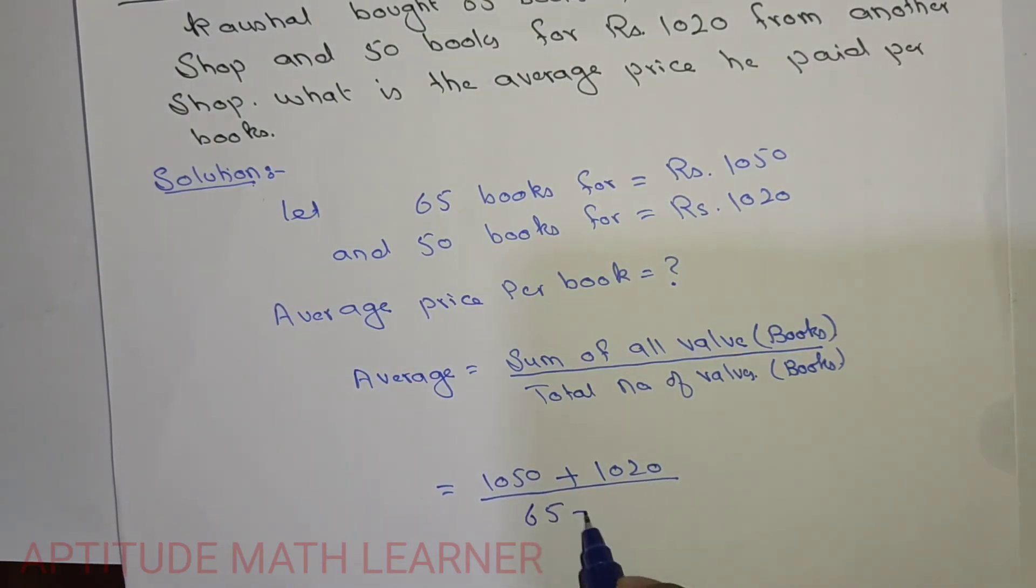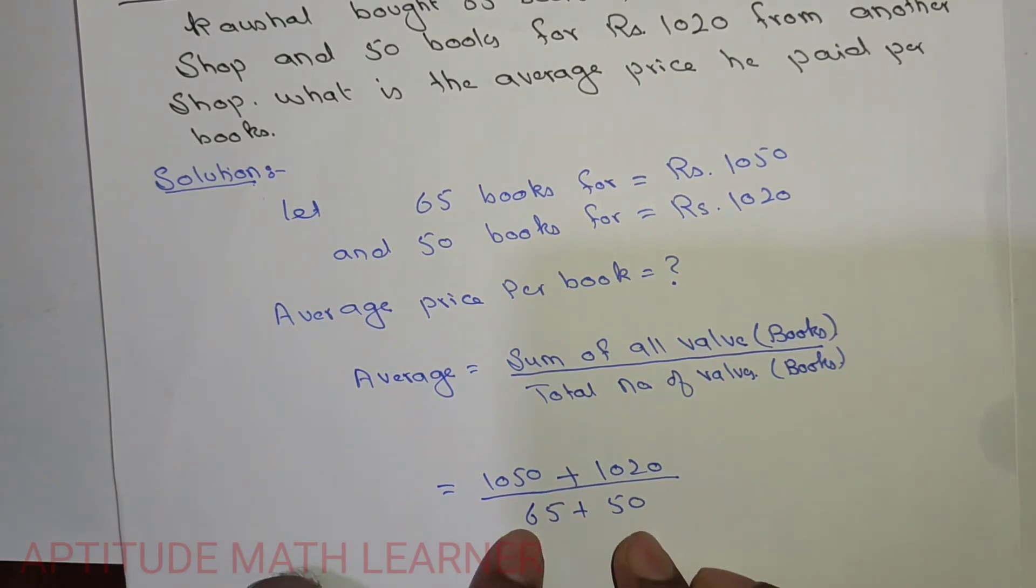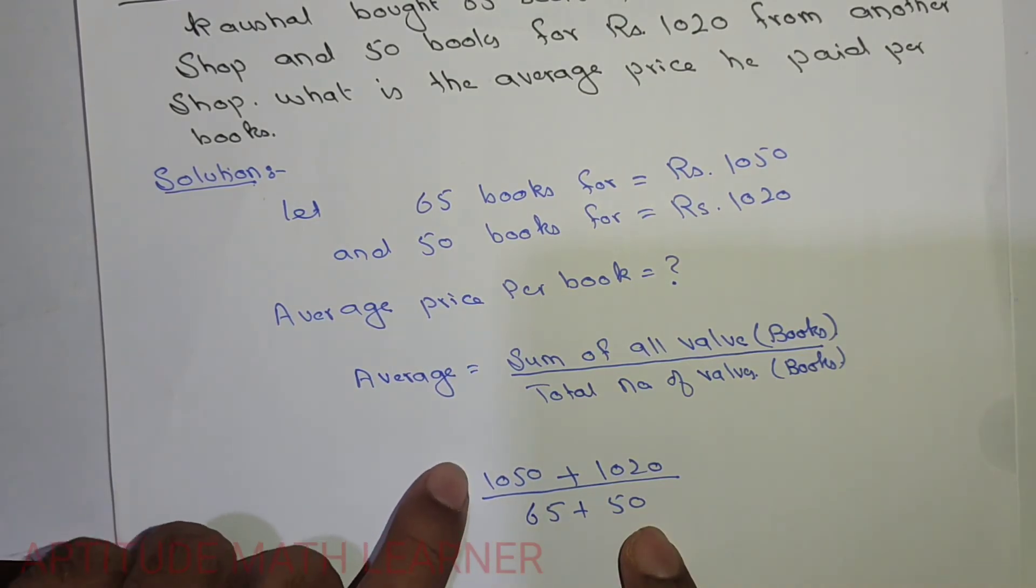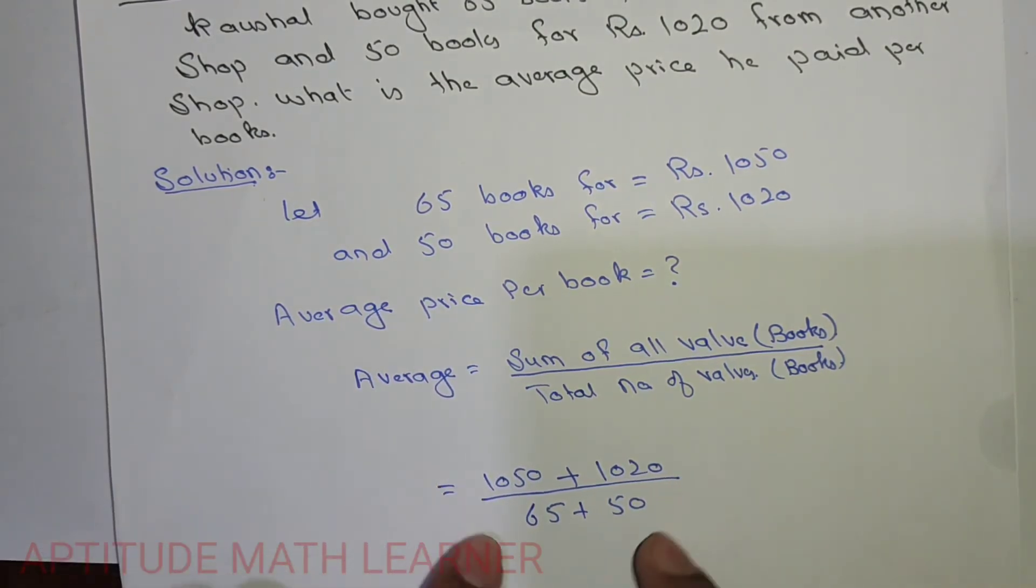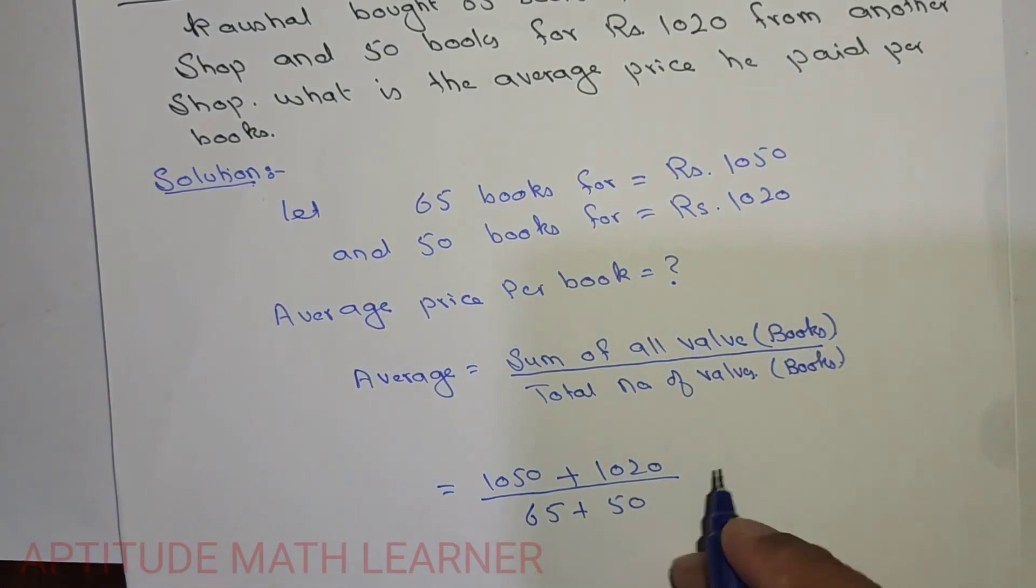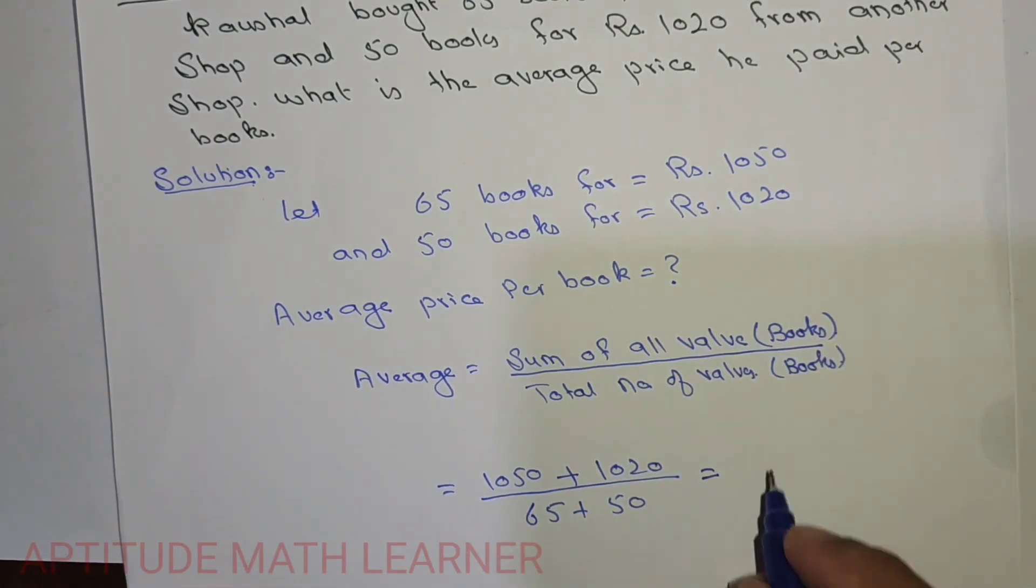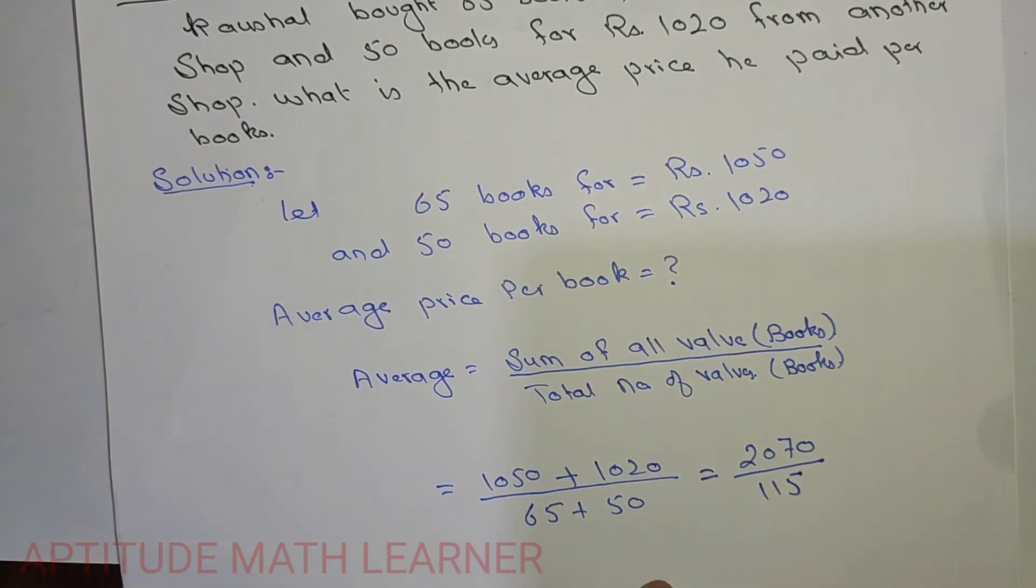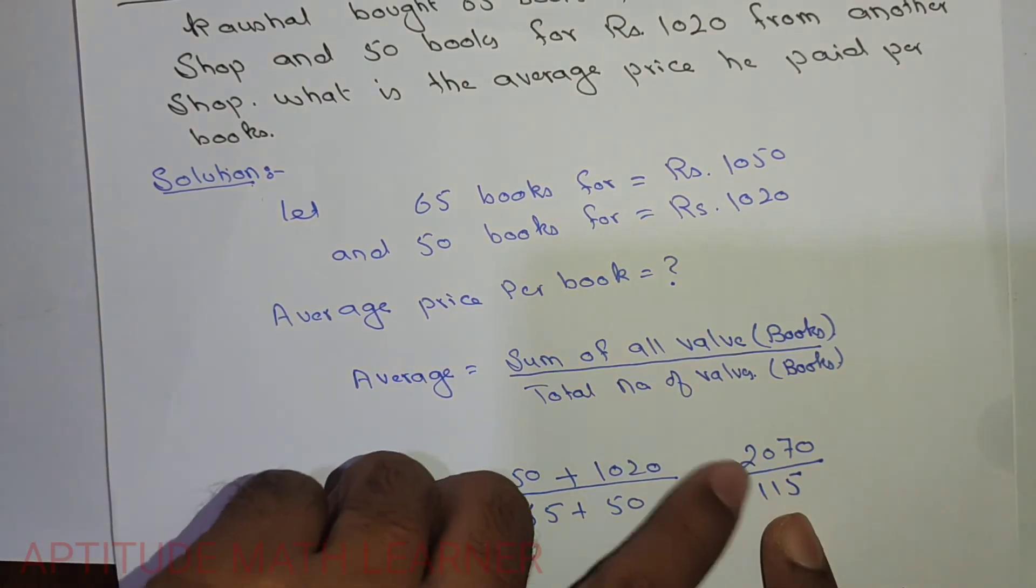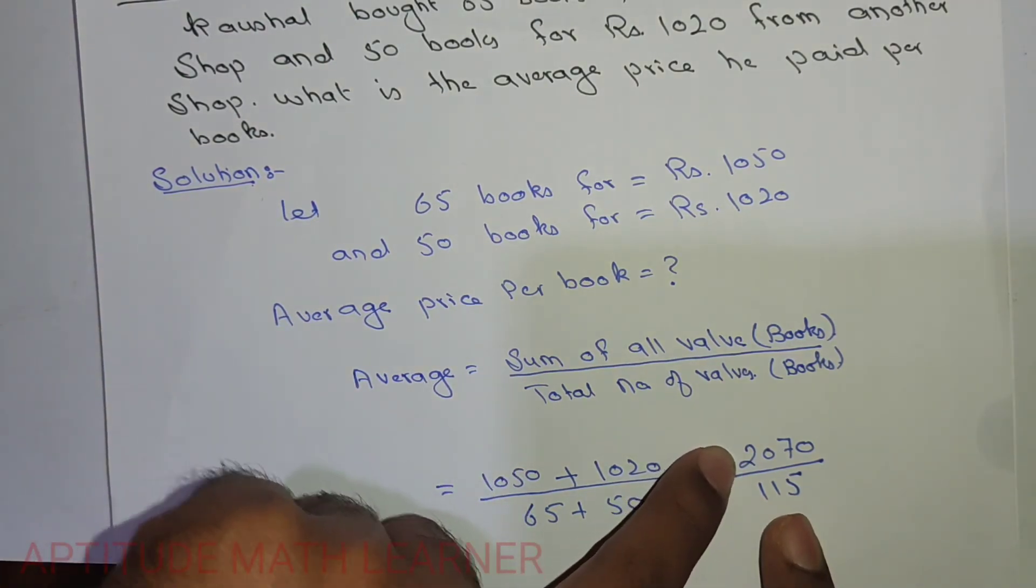So 65 plus 50 books, these are the total number of books. For 115 books he paid 2070 rupees total.